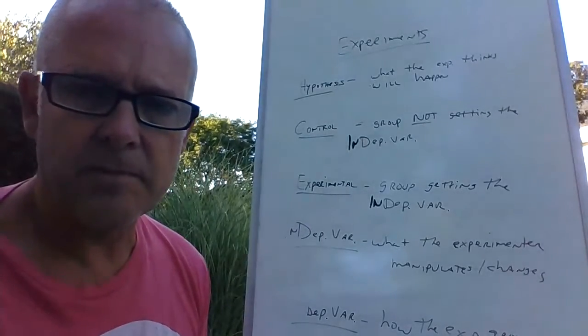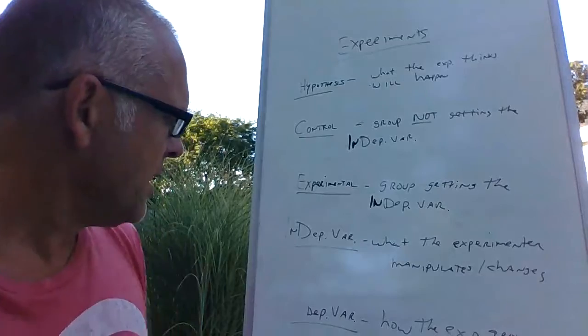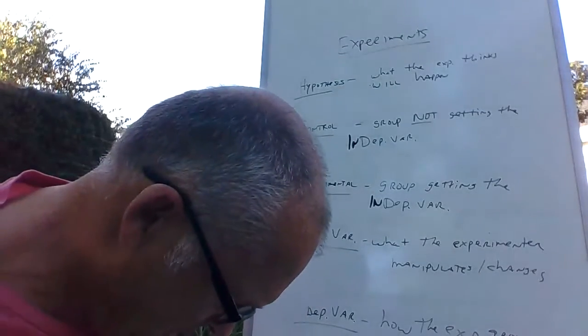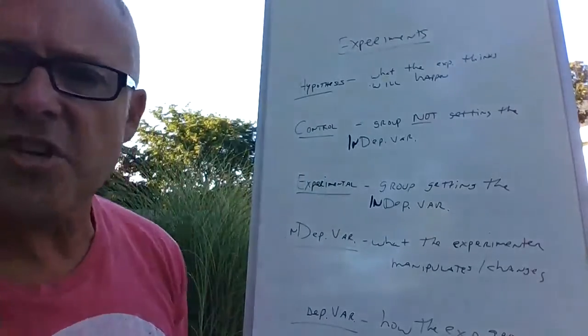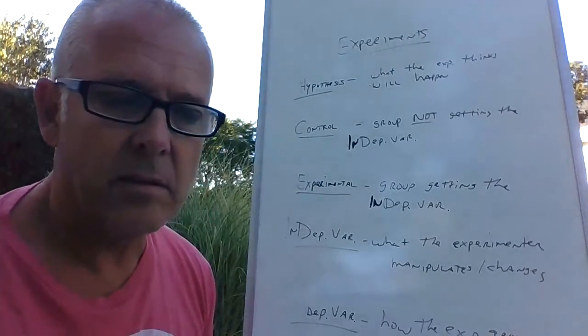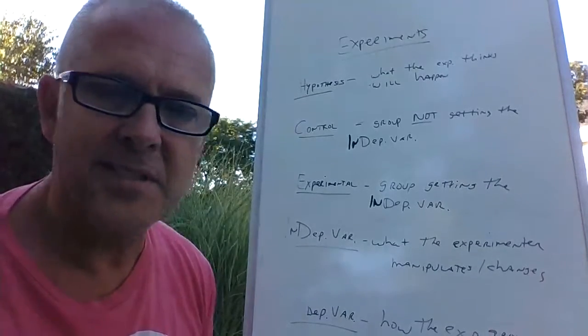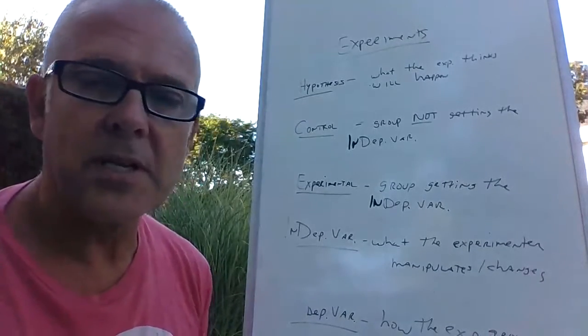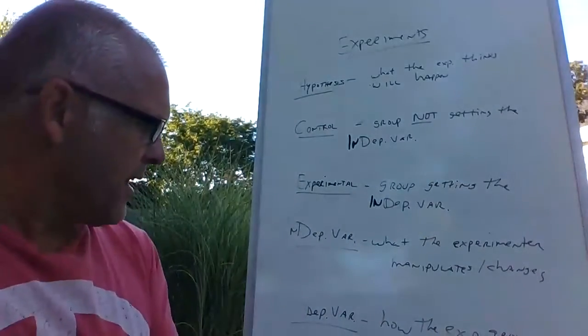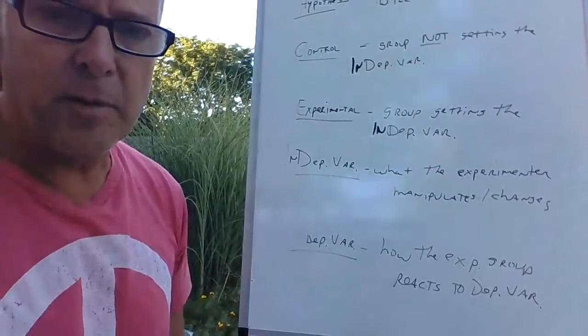So to define this, your independent variable is what the experimenter changes or manipulates. Paint color of the walls. Think about sound or what time you go to lunch, all these different things.